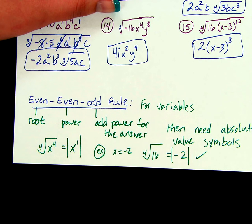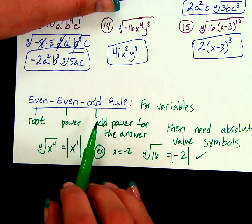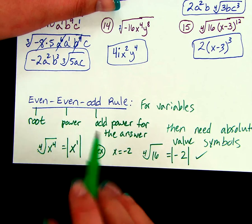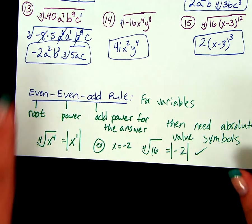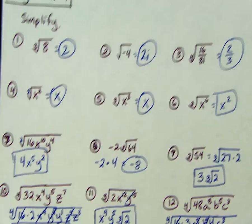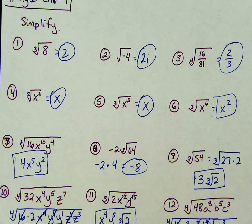So again, we need the absolute value symbols if we have an even root of an even power and we get an odd power for the answer. We're going to go back through the examples that we've already worked through and just check our even-even-odd rule, and add in the absolute value signs where needed.